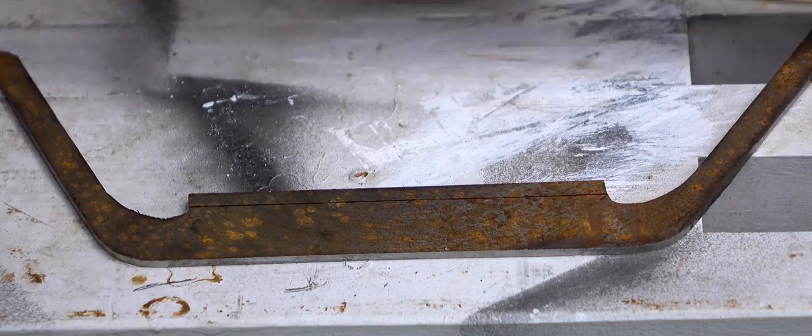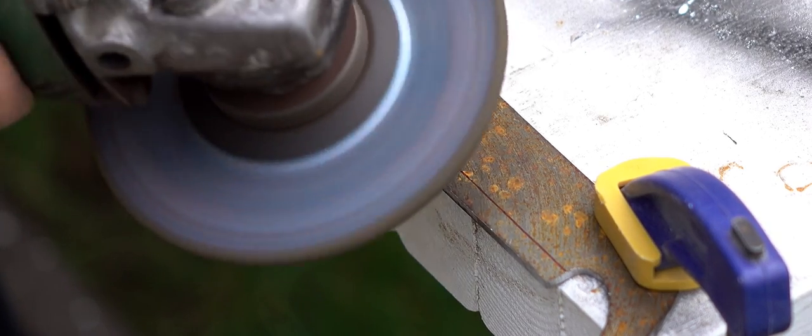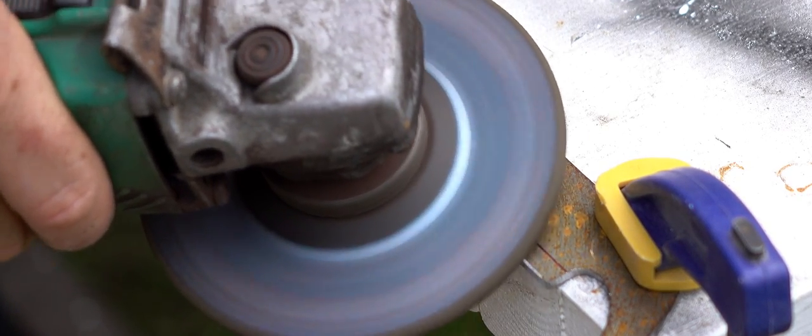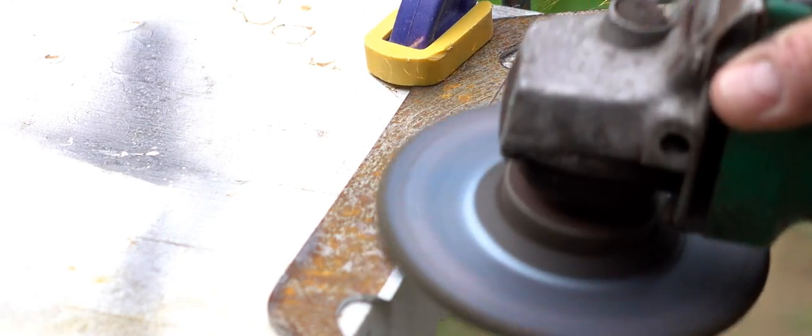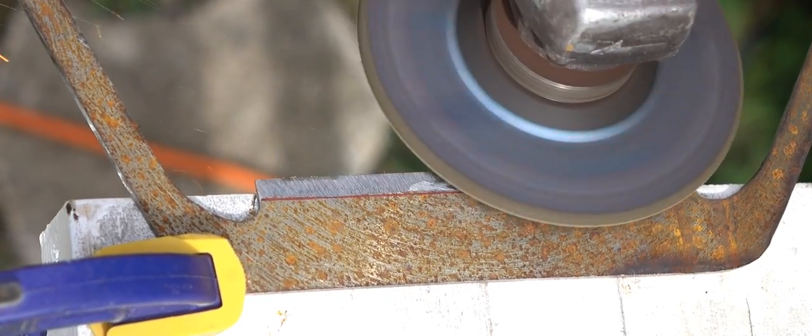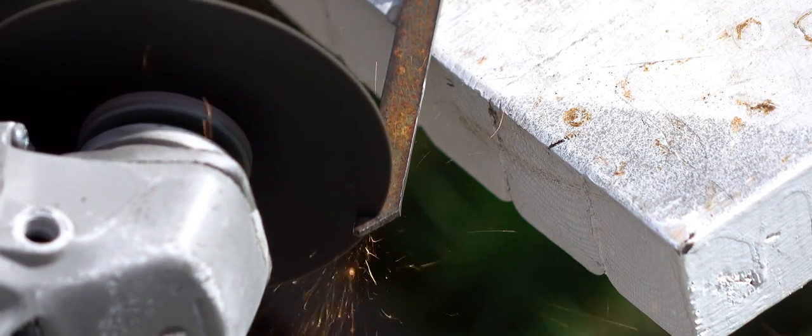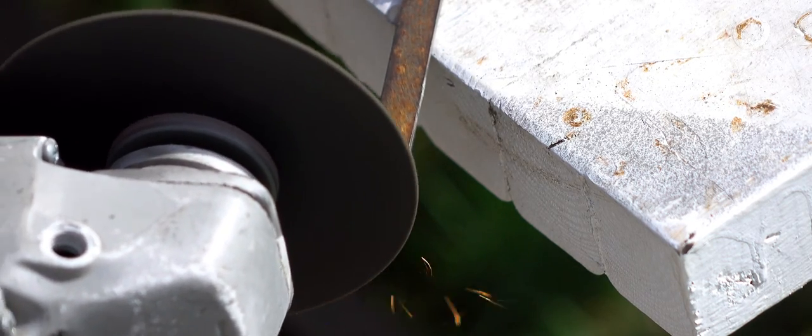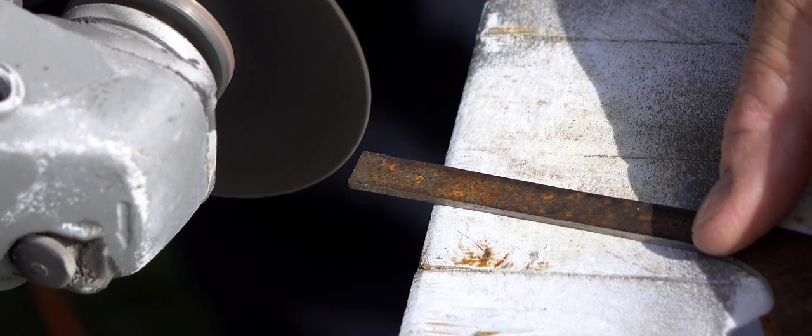So with the basic shape cut out, I can mark and roughly grind the bevel for the cutting edge. Here I'm trimming out the ends of the arm square, and then I'm going to cut part of the way in for something I want to do later in the build.